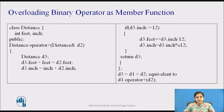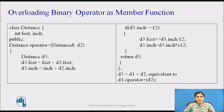Let's see an example of overloading a binary operator as a member function. The class name is Distance. It has two data members, feet and inch, of type integer. Operator plus is a member function which accepts an object by reference. It performs the addition of two objects and stores the result in a third object d3. Since one foot comprises 12 inches, if inch is greater than or equal to 12, we divide it by 12, add the quotient to feet, store the remainder in inch, and then object d3 is returned.